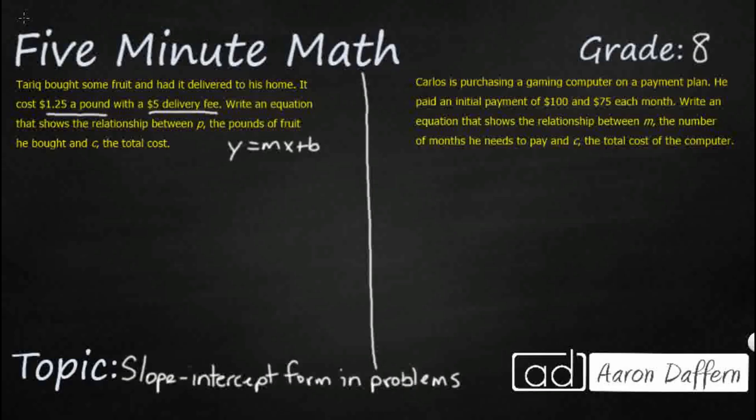So write an equation that shows the relationship between p, the pounds of fruit, and c, the total cost. So my pounds of fruit is this right here, and then I'm looking for the total cost. So sometimes they won't give you the y and the x. So really this y is going to end up being that c. So let's rewrite it right here.